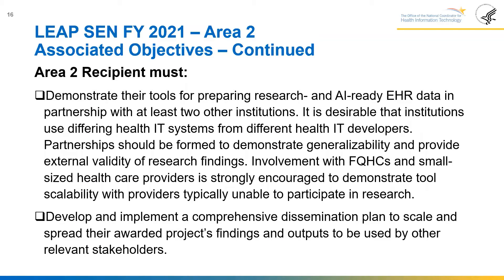The area two recipient must demonstrate their tools for preparing research and AI-ready EHR data in partnership with at least two other institutions, desirably using differing health IT systems from different developers. Partnerships should demonstrate generalizability and provide external validity of research findings. Involvement with federally qualified health centers and small-sized healthcare providers is strongly encouraged. Recipients must also develop and implement a comprehensive dissemination plan to scale and spread awarded project findings and outputs to other relevant stakeholders.